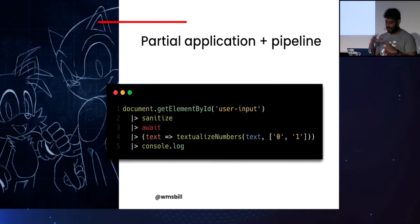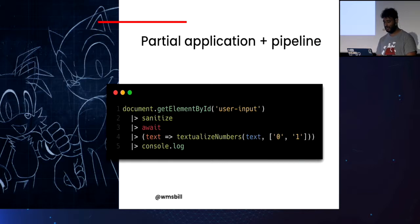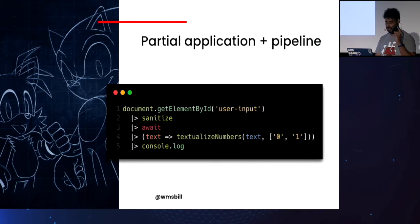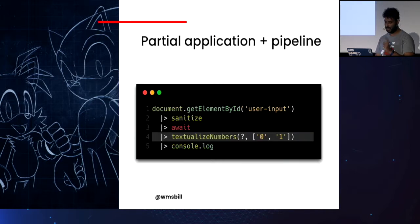Just to wrap up partial application: remember the minimal proposal and F-sharp pipeline had this arrow function with parentheses as a small syntax overhead. We can use partial application to achieve the same thing — you can see that line 2 or line 4 could be rewritten using the partial application syntax.